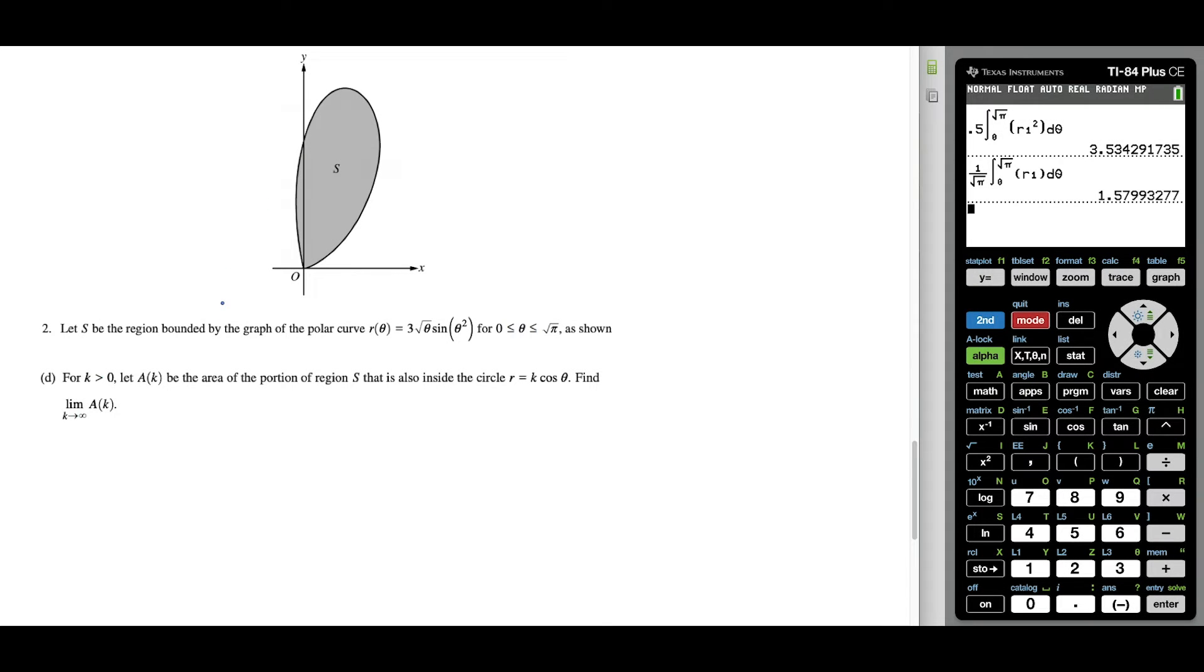So for this last part here, this part of the question is definitely the most involved. We're told that for some k value greater than zero, a of k is the area of the portion of region S that also lies inside the circle r equals k cosine theta. And we want to find the limit as k goes to infinity of a of k. So to gain some conceptual insight here into the question, just know that we should be investigating this a little bit.